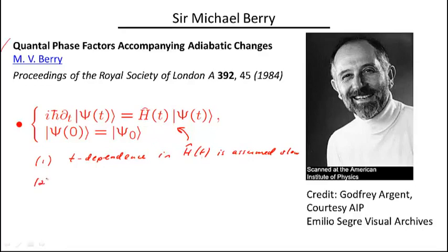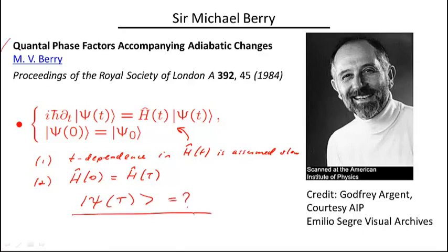So we have some very slowly changing Hamiltonian. Also, let's assume that the Hamiltonian returns to itself after a certain period — let me call it capital T. So basically we have a periodic in time slow perturbation. The question he asked is what happens with the wave function as we reach this moment of time T — what is the wave function at the final moment? As we will see, this wave function has a very interesting topological or geometric contribution, which is completely counterintuitive and takes some time to digest even after the derivation.